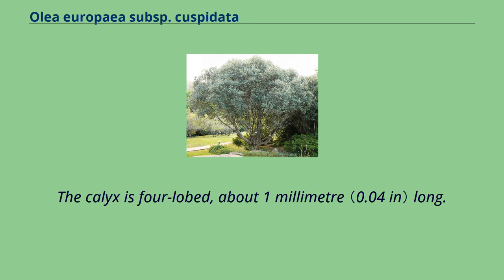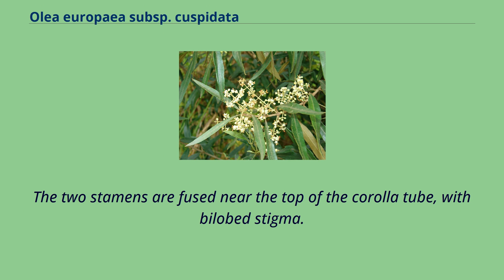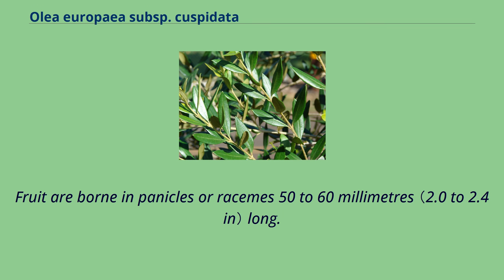The calyx is four-lobed, about 1 millimeter long. The corolla is greenish-white or cream. The tube is 1 to 2 millimeters long, lobes are about 3 millimeters long and reflexed at anthesis. The two stamens are fused near the top of the corolla tube, with a bilobed stigma. Fruit are borne in panicles or racemes 50 to 60 millimeters long.